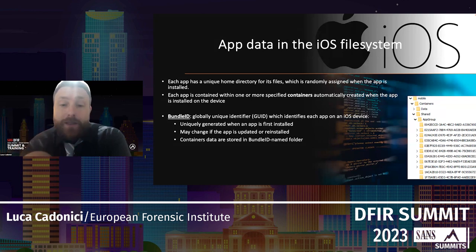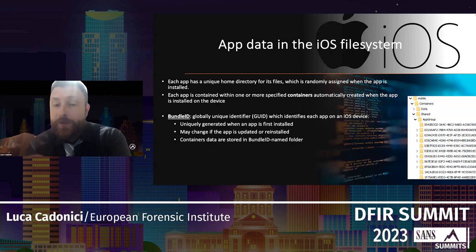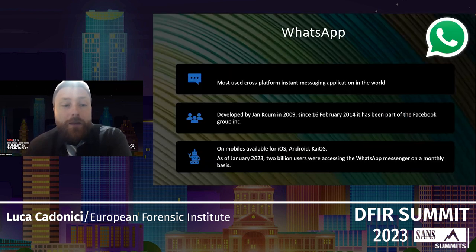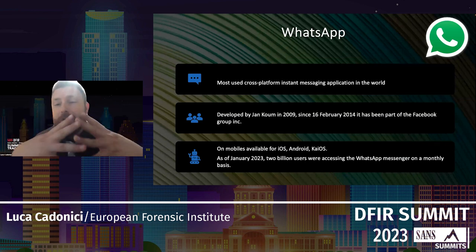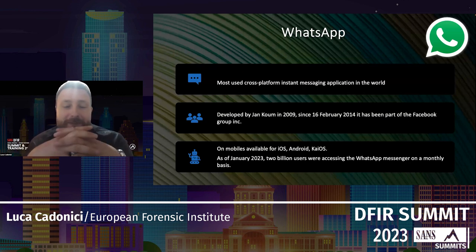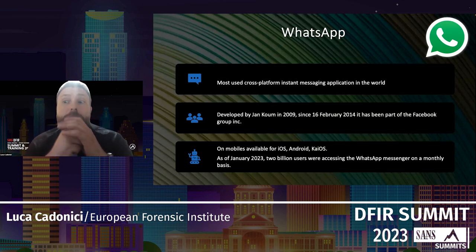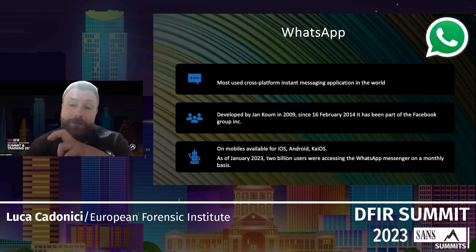Every app installed on iOS devices is identified by a bundle ID, which is a globally unique identifier generated when an app is first installed. You can see on the right some bundle IDs for several applications. WhatsApp, the most common cross-platform instant messaging application, is the subject of our investigation. It's available for iOS and Android.